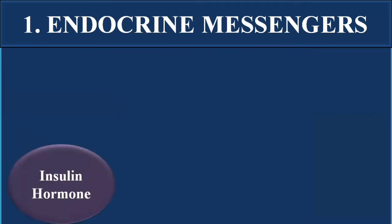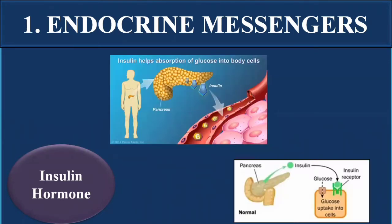Insulin hormone helps in the uptake of glucose. It is released by the pancreas, which acts as the controlling organ. Insulin is released into the bloodstream and carried to target cells and tissues, where it helps in glucose uptake and regulates blood glucose levels.